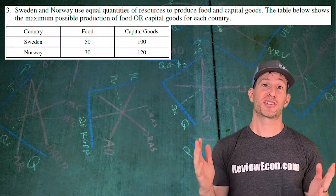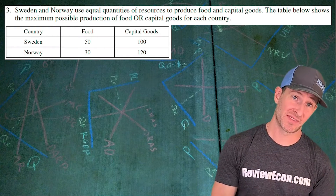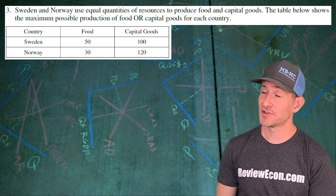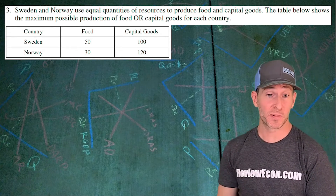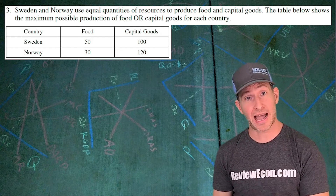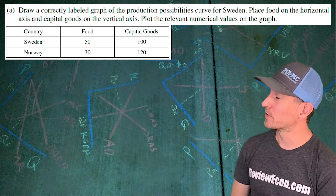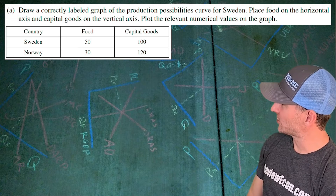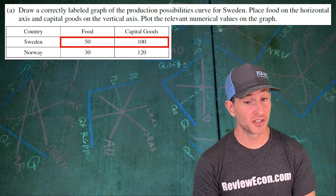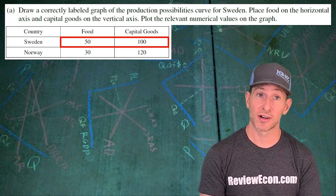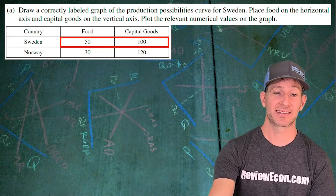This question is a production possibilities curve and comparative advantage question. We have two countries, Sweden and Norway, and they can both produce food or capital goods. For part A, we have to draw a production possibilities curve for Sweden. Sweden can produce 50 units of food or 100 units of capital goods. Let's go ahead and sketch it out.